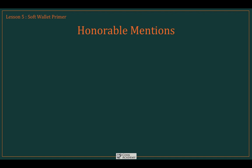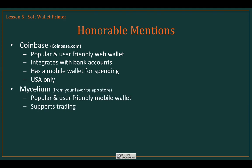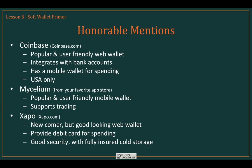The honorable mentions include some big names. Coinbase is a very popular and user-friendly web wallet that integrates with bank accounts and has a mobile wallet for spending — but it's USA only and Bitcoin only, so it didn't make our shortlist. Mycelium is also extremely popular as a mobile wallet downloadable from any mobile app store; its unique feature is that it supports Bitcoin trading, but it lacked enough of our qualifier criteria. Finally, Zappo is a newcomer with a very good-looking web wallet and a debit card for spending; they seem to have excellent security and offer fully insured cold storage.